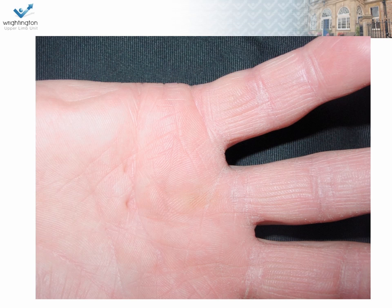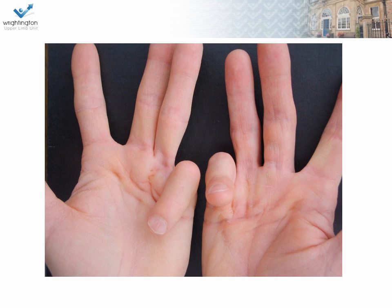Next question. This is a 40 year old male who has noticed some thickening in the palm of his hand. Can you hazard a guess as to what you think might be developing? Here's more established Dupuytren's disease. Can you point out to me the aetiological risk factors associated with Dupuytren's disease?